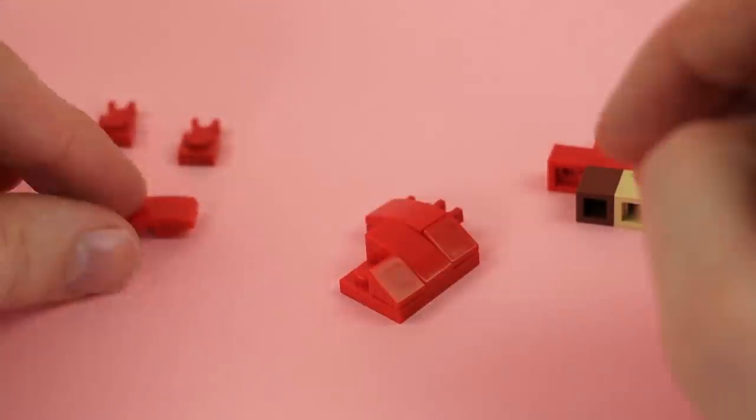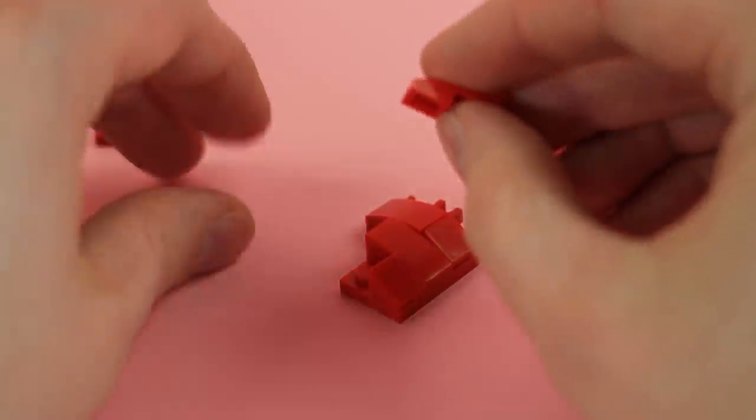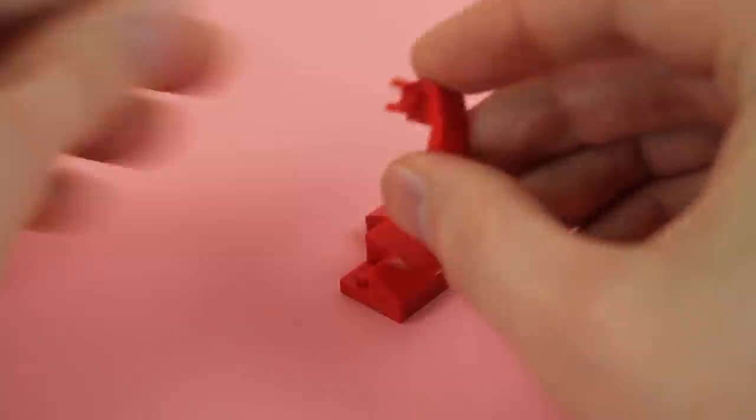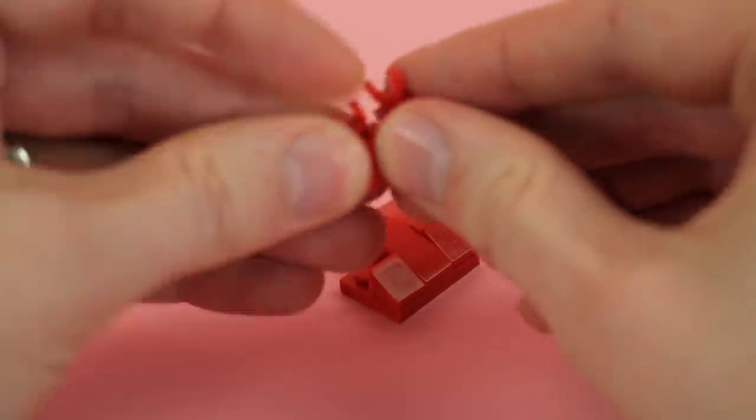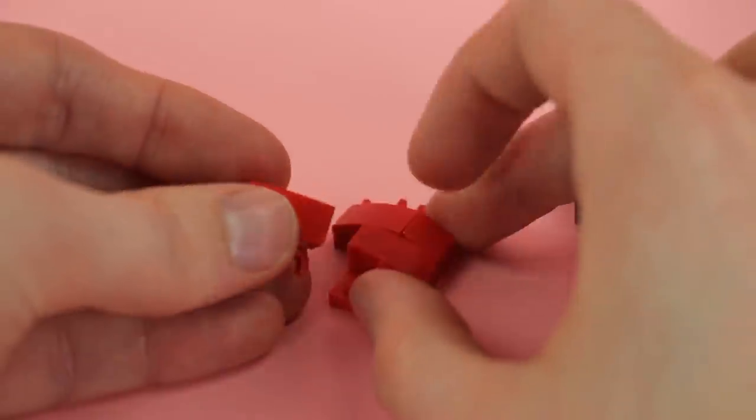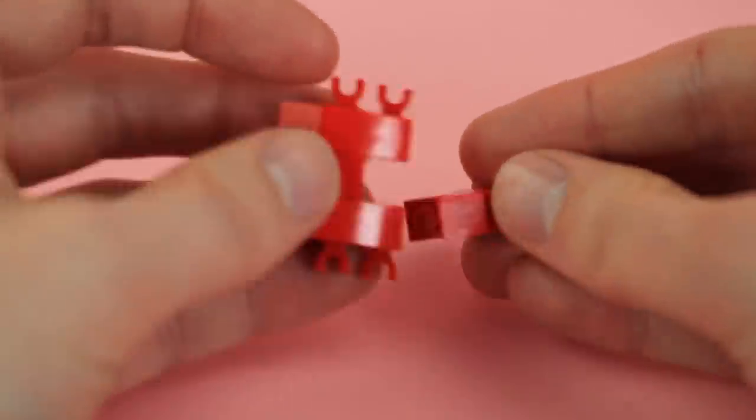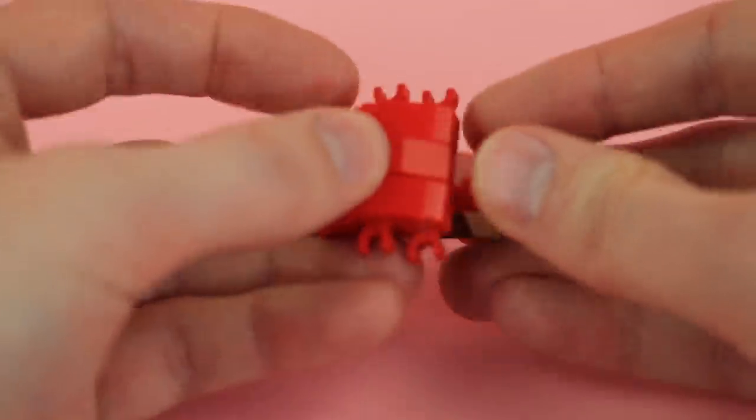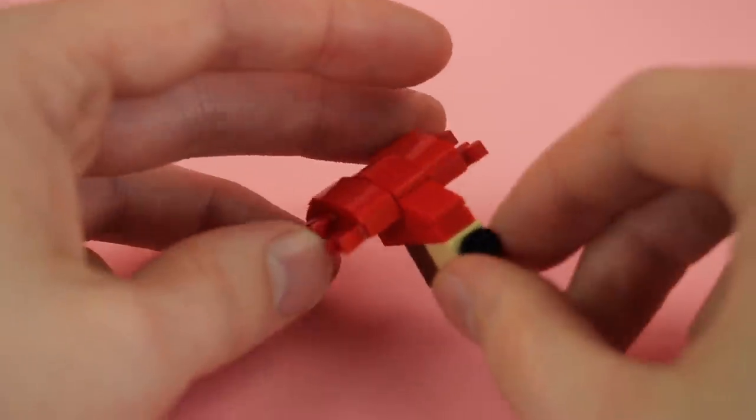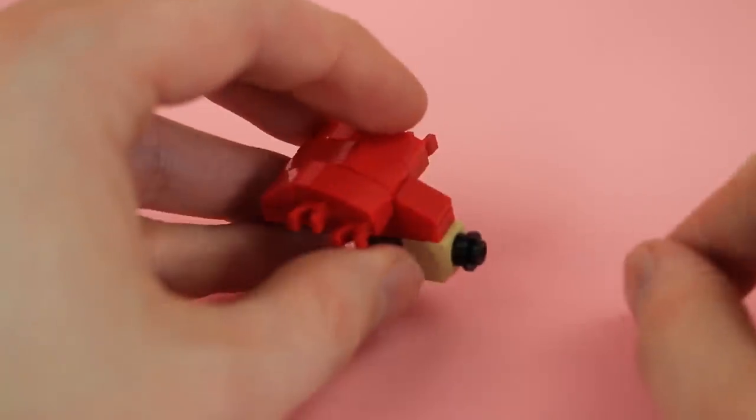And we're going to mirror that on the other side with another curvy downward slope and some 1x1 plates with clip. And then that all looks like that. And it fits right onto the back here. So we've got basically the center and top of his head.